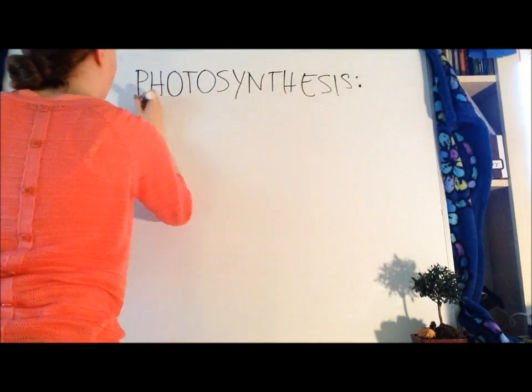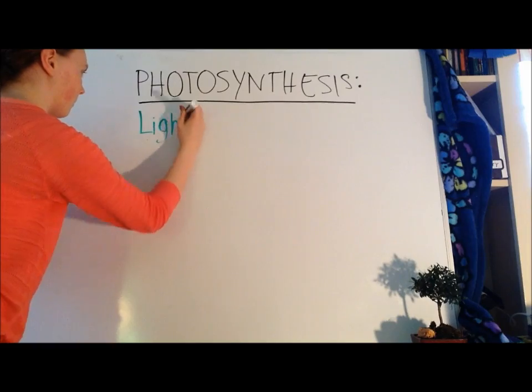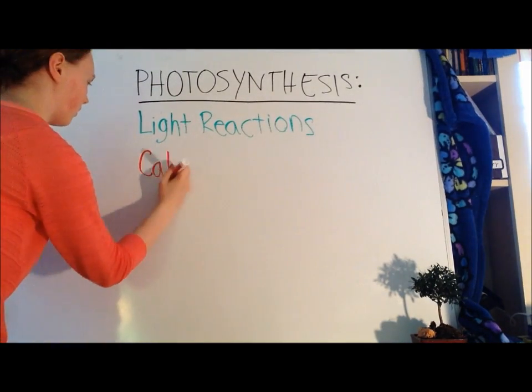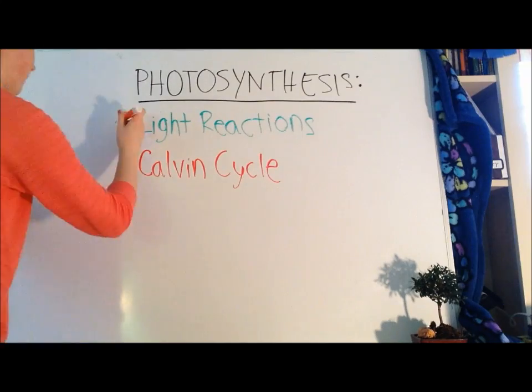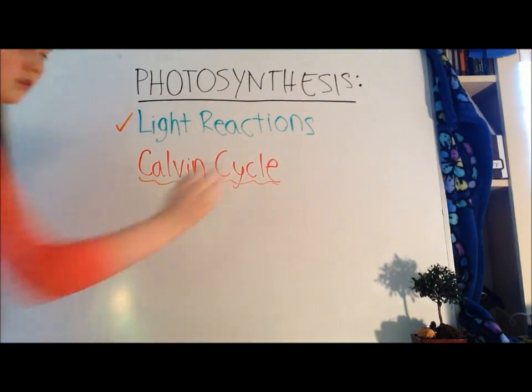Photosynthesis, it's a two-part process. We have the light reactions and the Calvin cycle. Now, we already did the light reactions, so now on to part two, the Calvin cycle.